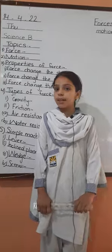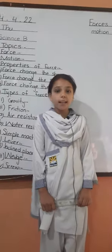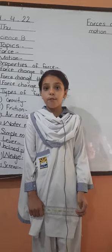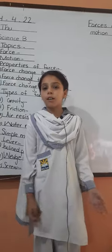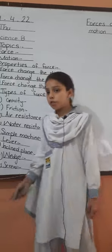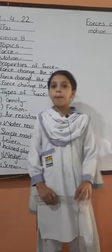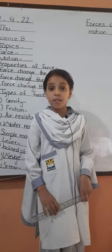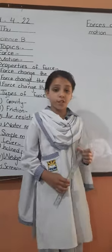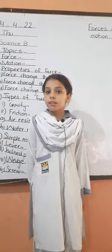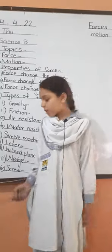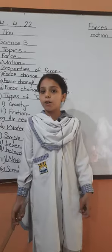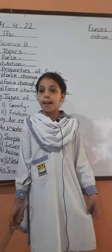A wedge is two inclined planes joined together. The pointed surface is used to split objects. For example, an axe is a type of wedge. The screw works like an inclined plane wrapped in a spiral.